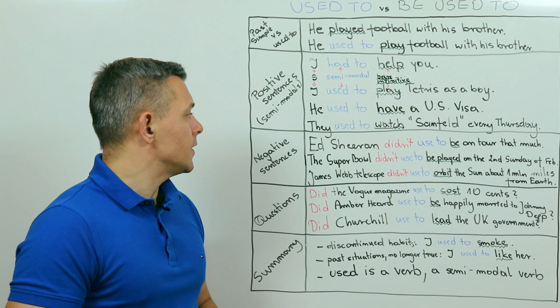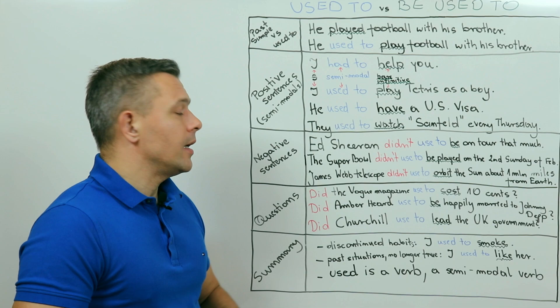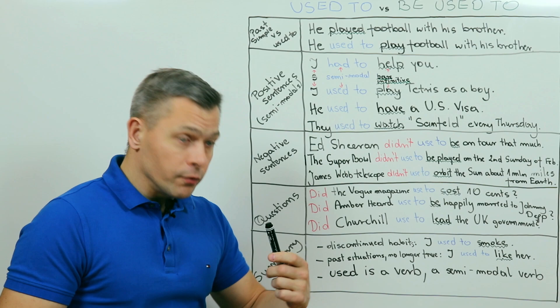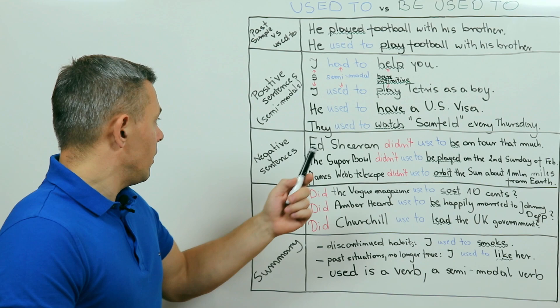Let's now move on to negative sentences with the used to structure. As I have already pointed out, they need auxiliary didn't. Then we have USE, without the D, followed by to, remember, semi-modal, and another verb in its bare infinitive form. So, the one without the to.